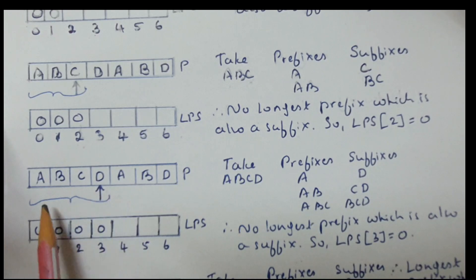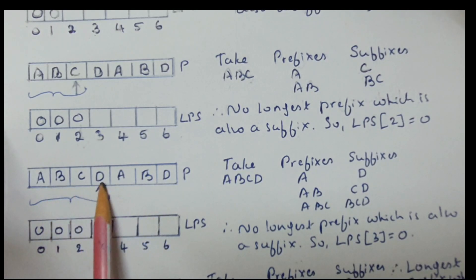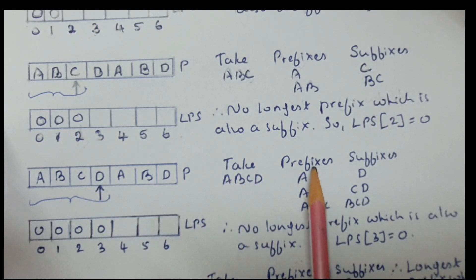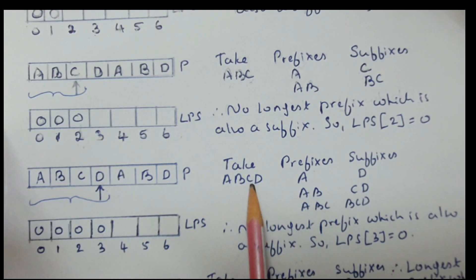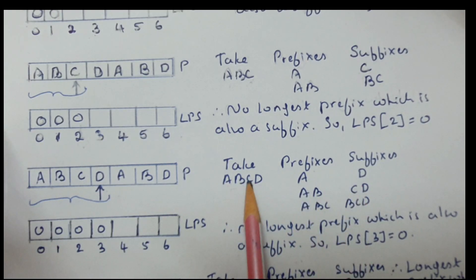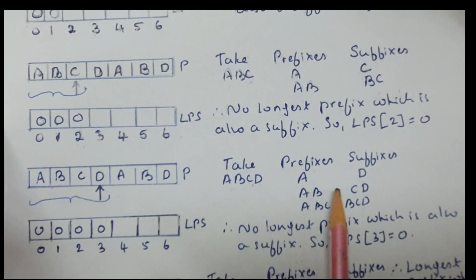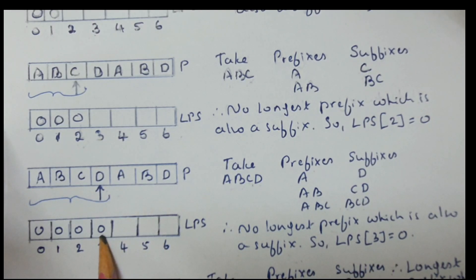Step 4: four characters ABCD are considered and LPS[3] has to be filled. Prefixes are A, AB, ABC; suffixes are D, CD, BCD. Comparing: none are equal, hence no longest prefix which is also suffix. LPS[3] = 0.